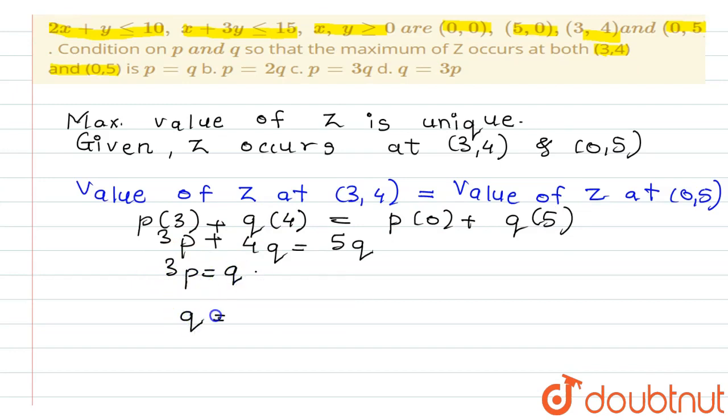Hence, Q is equal to 3P. That means option B is the correct answer. Okay, I hope you have understood the solution. Thank you.